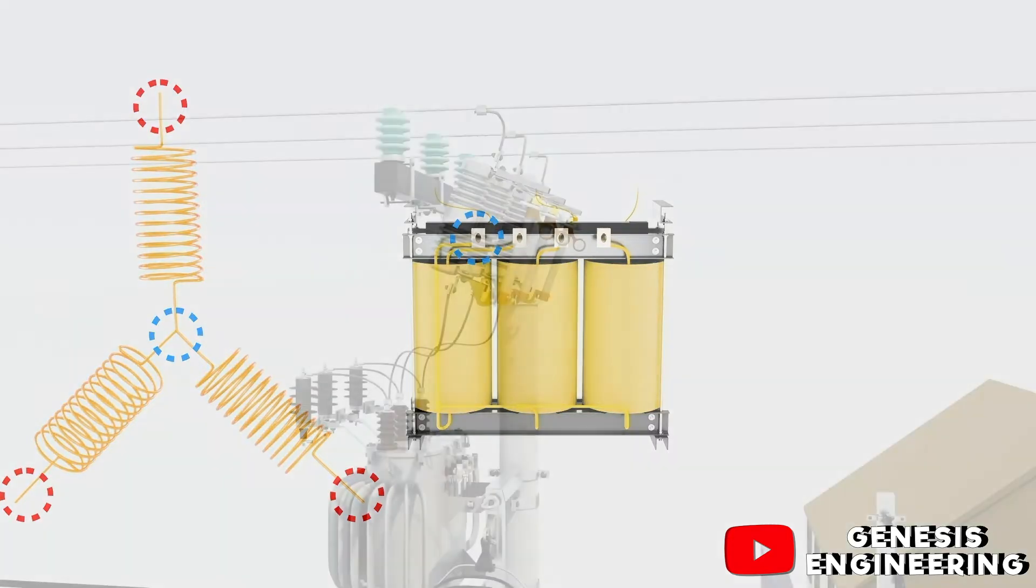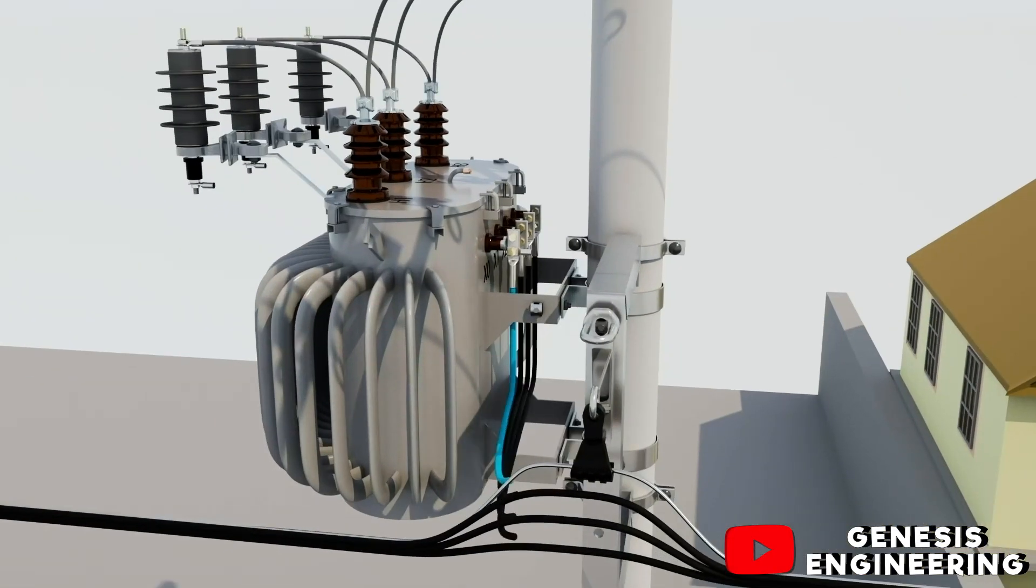Now that we know how the neutral is generated, let's understand how it gets to the houses.